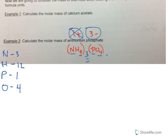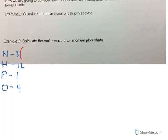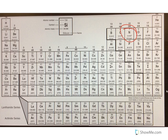The next thing we shall do is to look up our masses. So, nitrogen is 14.007. Hydrogen, 1.008.